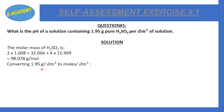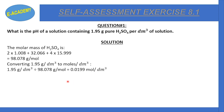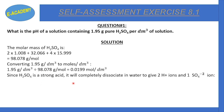We have a mass of 1.95 g per dm³. Now we convert this to moles per dm³: 1.95 g/dm³ divided by 98.078 g/mol gives us 0.0199 moles per dm³.